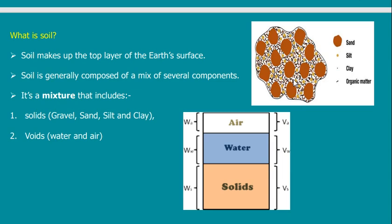The three major components are: solid particles — regardless of size, whether big, small, or medium — then liquid, which is water inside the soil itself, and voids, which is air. So soil is something called a three-phase system.